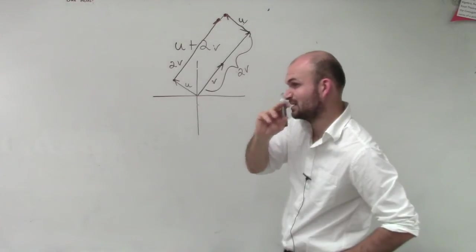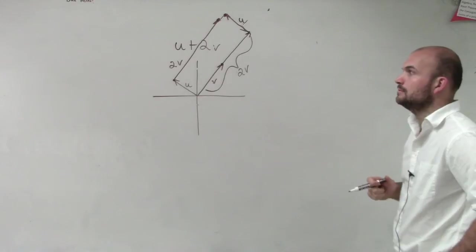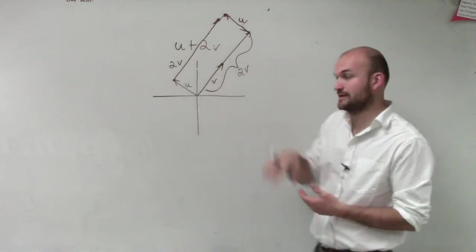So basically, whatever you're given, you can just draw that, and then you just mirror it over. Yeah. You're taking one vector and adding it to the end of your other vector.